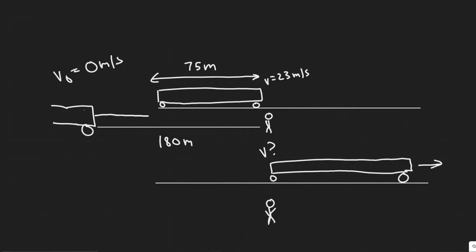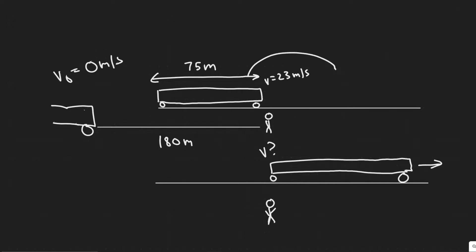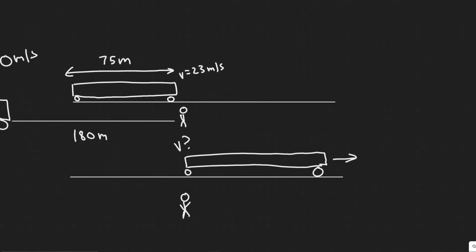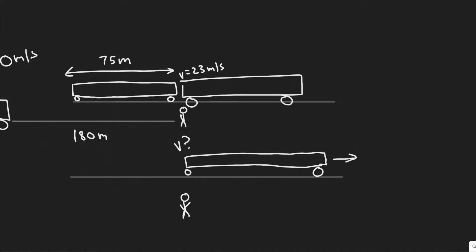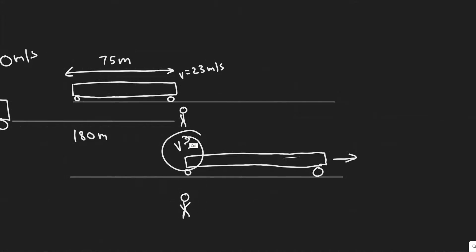It's going to accelerate and travel until eventually the front of the train is right where this guy is, and we know its speed at that point is 23 meters per second. Then the train keeps going, and eventually the back of the train is where the guy is at. We're trying to find its speed at that point — when it is fully past the guy.